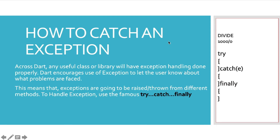Now we understand how to throw an exception, but what if multiple applications or modules are continuously throwing exceptions? Dart encourages you to throw exceptions, but you also need a mechanism to catch them. In Dart we use try-catch-finally — a block of code that handles exceptions for us.